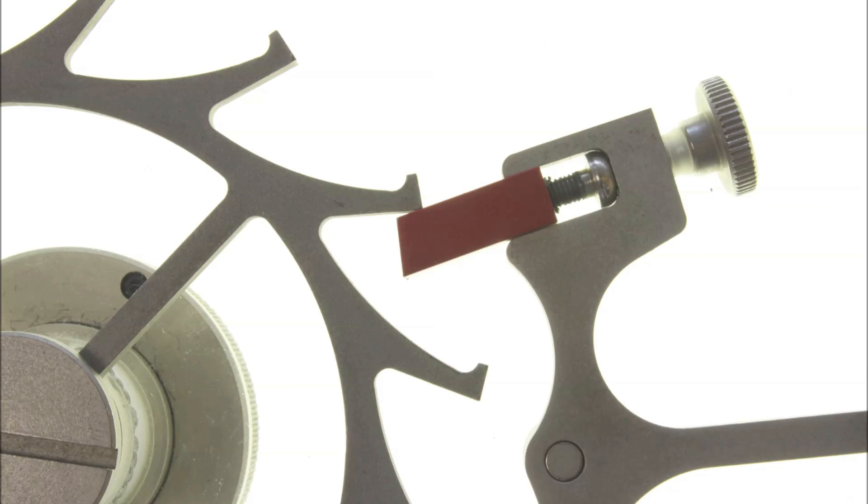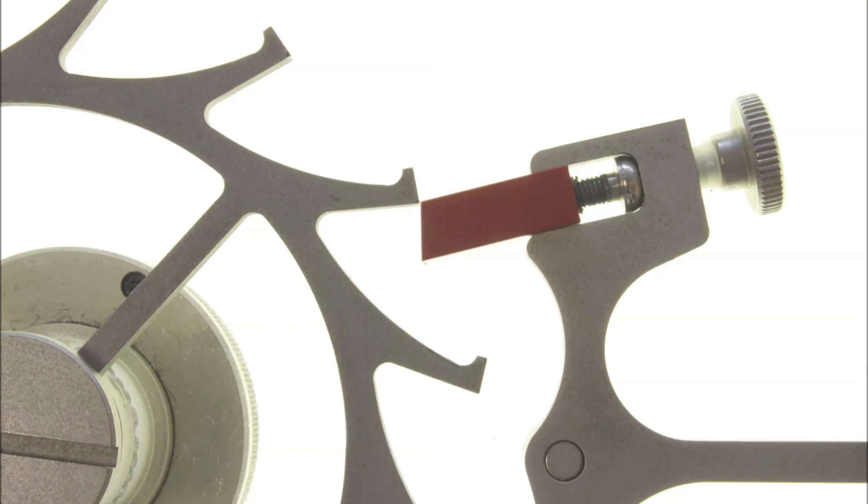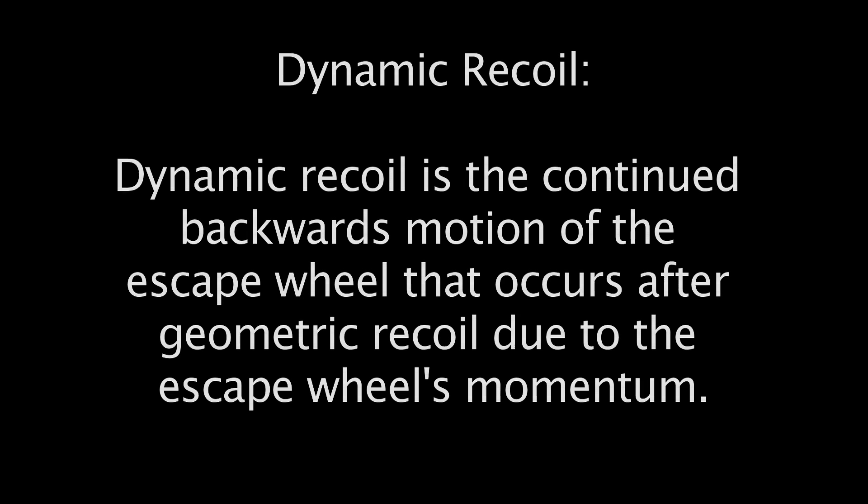This continued backward motion is called dynamic recoil. Dynamic recoil is the continued backwards motion of the escape wheel that occurs after geometric recoil due to the escape wheel's momentum. That momentum is a result of the energy imparted to it during the geometric recoil and the mass of the escape wheel.